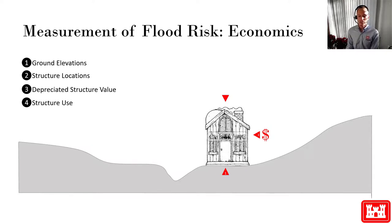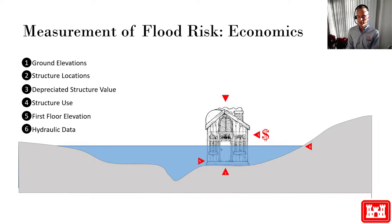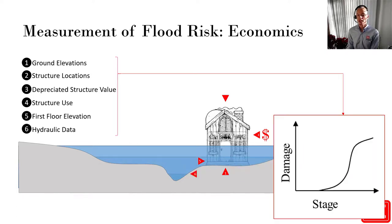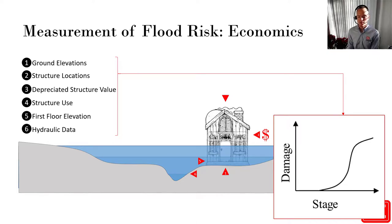Finally, we collect information about the elevation of structures, which gives us the elevation at which water enters the structure. This information is linked to hydraulic data, which describes the depth of floodwaters in the floodplain. This accomplishes our main goal, which is the development of a percent value damage stage relationship. This relationship can be applied to a wide range of events. The percent damage information generally comes from expert elicitation, direct observation, or a mixture of both. The depth damage information is aggregated by impact area or reach.